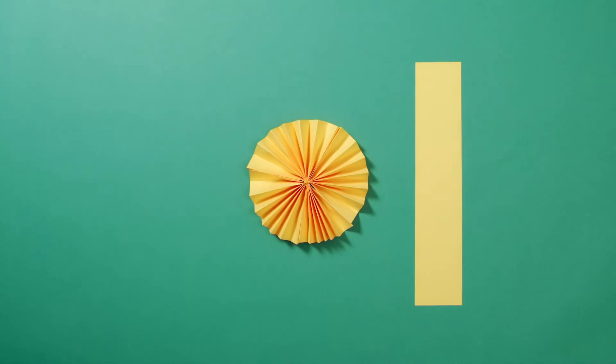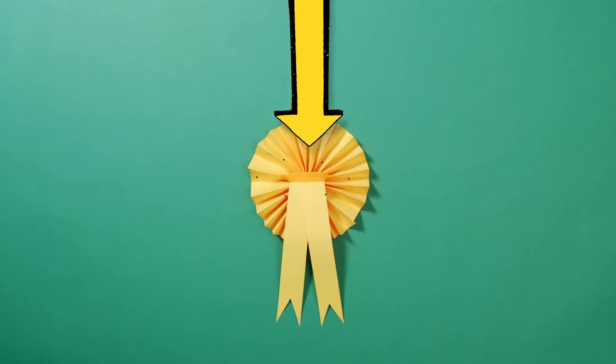Now take your extra strip of paper and cut it down the middle, like this. Then cut out two triangles at the bottom of each strip to make the ribbons. Fix them to the back of the rosette with some sticky tape like this.